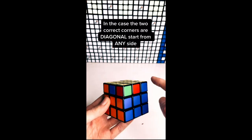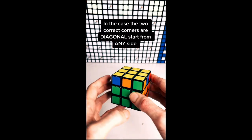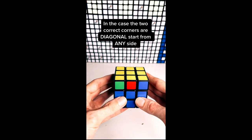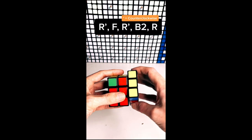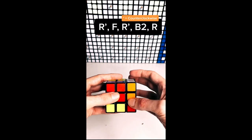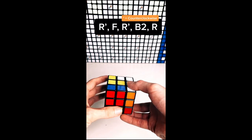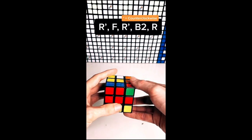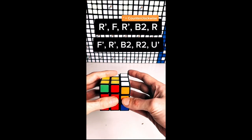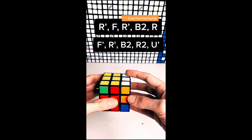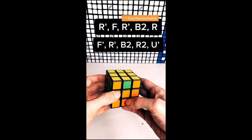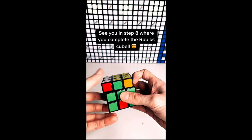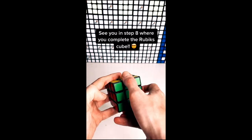In the case the two correct corners are diagonal, start from any side. With your taillights at the back, use the algorithm shown. See you in step 8, where you complete the Rubik's Cube.